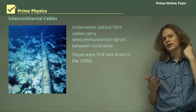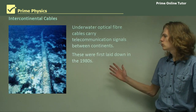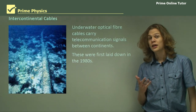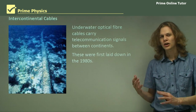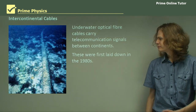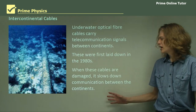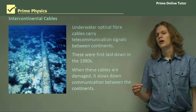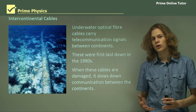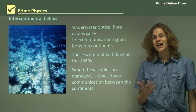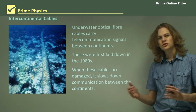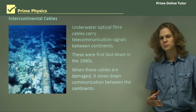They were first laid down in about the 1980s, which is around the time that optical fiber technology was being developed, and also around the time where the internet was starting to be developed. So when these cables are damaged by sharp rocks near the bottom of the ocean, or by the anchor of a ship that happens to be passing by, it can damage the optical fibers and stop them from transmitting properly.